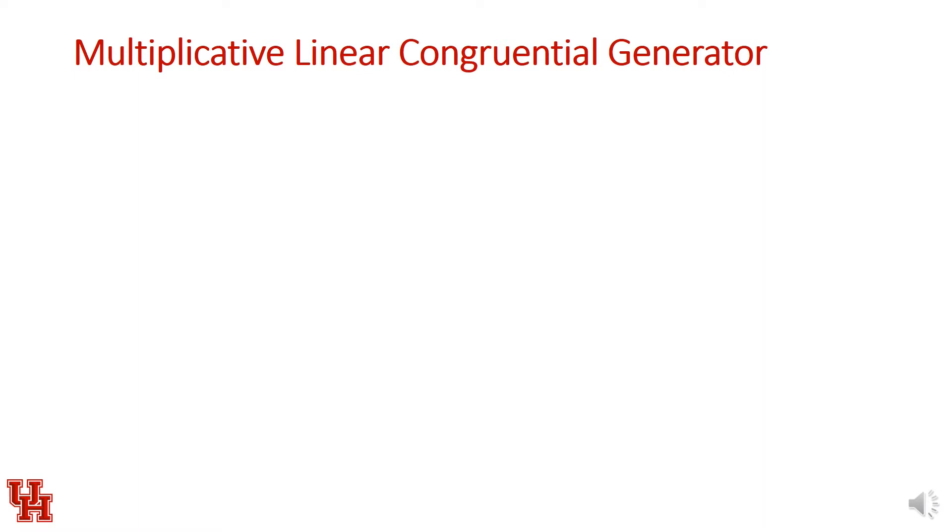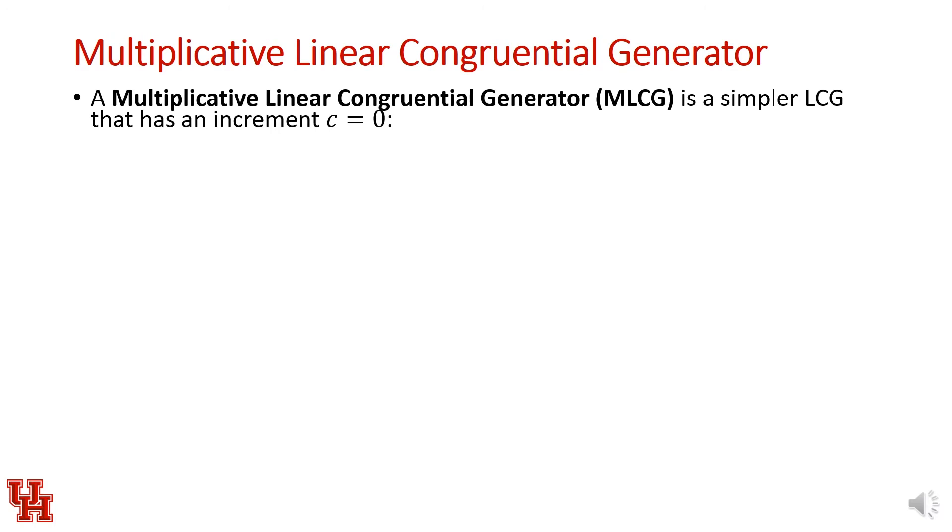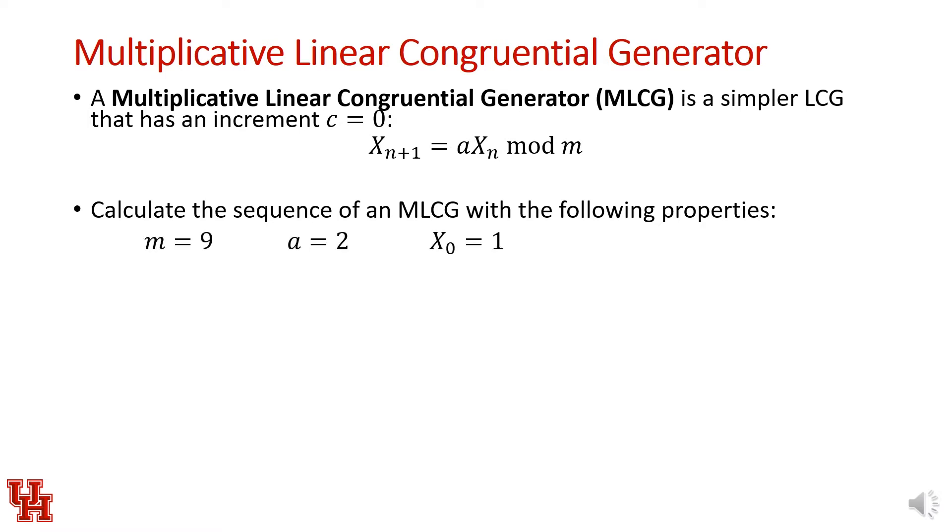Now let's take a look at a multiplicative linear congruential generator. This is a simpler version of an LCG that has an increment of 0. So this is the expression for an MLCG: X_{n+1} = aX_n mod m, where we just have a multiplier and a modulus. If we calculate a sequence of terms from an MLCG with a modulo of 9, a multiplier of 2, and a seed of 1, the first random number generated is 1, followed by 2, then 4, then 8. Once we hit the seed, the sequence starts repeating.